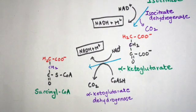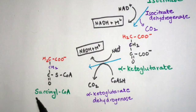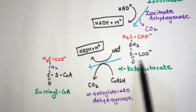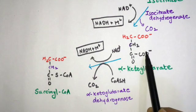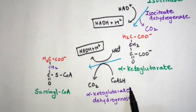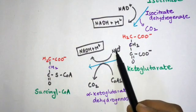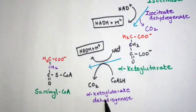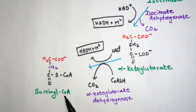In the fourth step, alpha-ketoglutarate is converted to succinyl coenzyme A. Coenzyme A is added to alpha-ketoglutarate, CO2 is liberated, and this is again an oxidative decarboxylation reaction. NAD+ is converted to NADH and H+. This reaction is catalyzed by alpha-ketoglutarate dehydrogenase, resulting in the formation of succinyl coenzyme A.